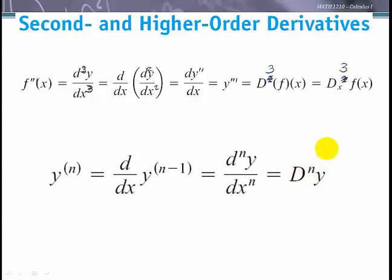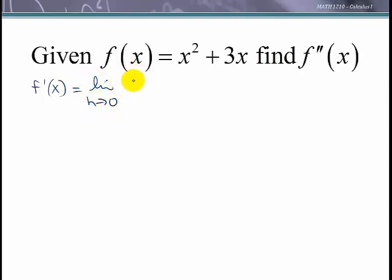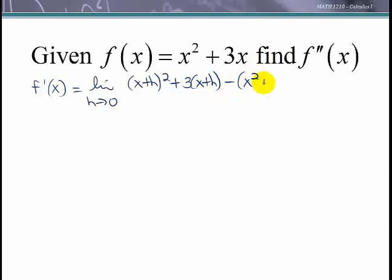Let's figure out a second derivative. The first thing we need to do is find the first derivative, which is the limit as h approaches 0 of the function at x plus h — so that would be (x+h)² + 3(x+h) — minus the function at x, all over h.